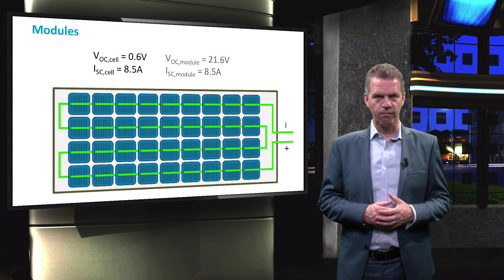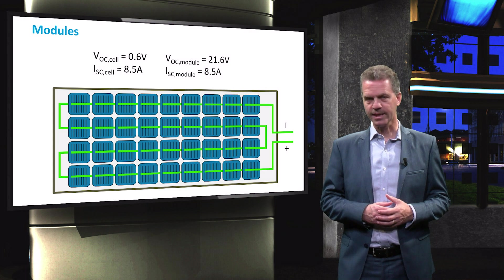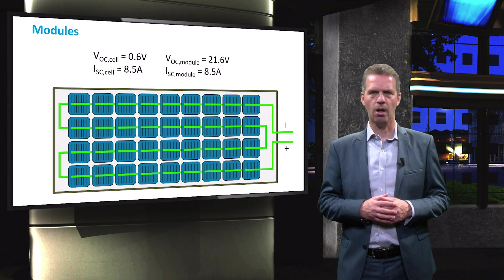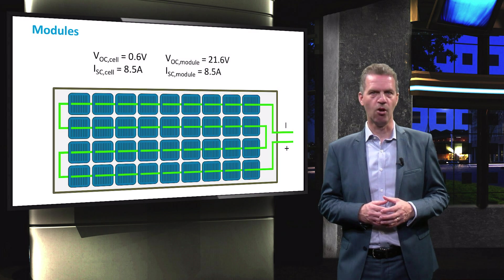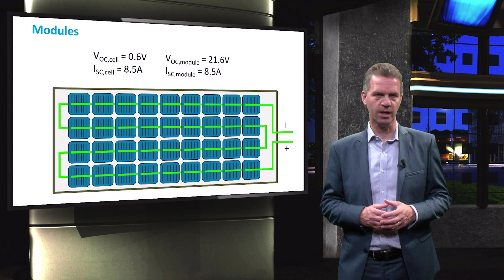If we consider the following module of 36 cells, all are connected in series. The output of the module will be 36 times the open-circuit voltage of a single cell.